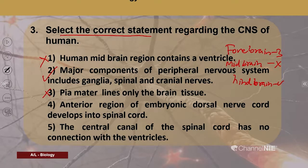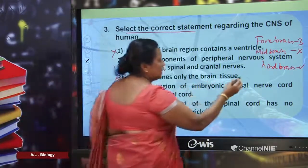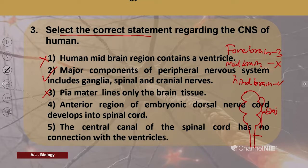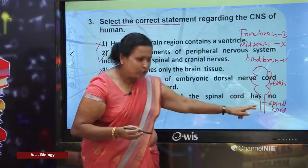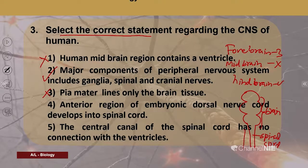Fourth option: the anterior region of the embryonic dorsal nerve cord develops into spinal cord. What actually happens is that the anterior region of the dorsal nerve cord develops into the brain — forming three vesicles. The posterior region converts into the spinal cord. So, while 'dorsal nerve cord' is correct, saying the anterior region develops into the spinal cord is wrong; it is the posterior region that develops into the spinal cord.